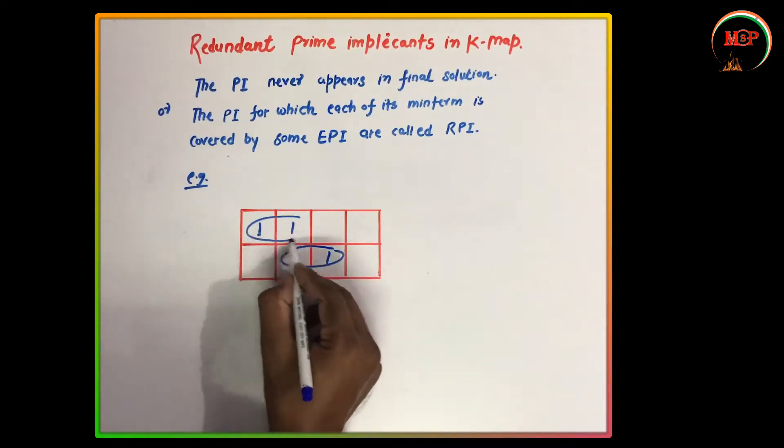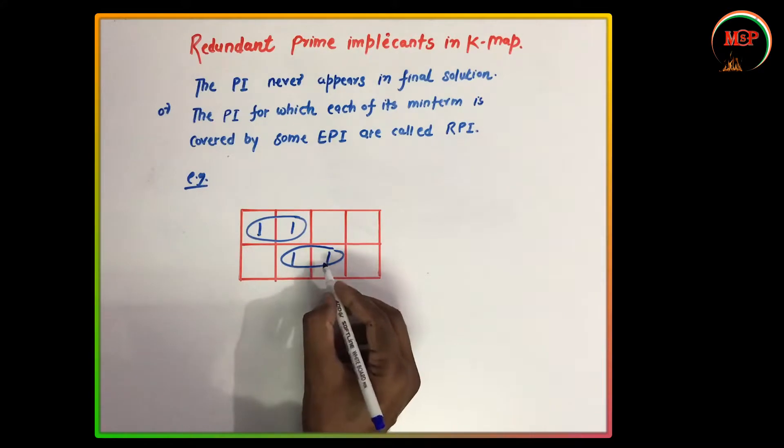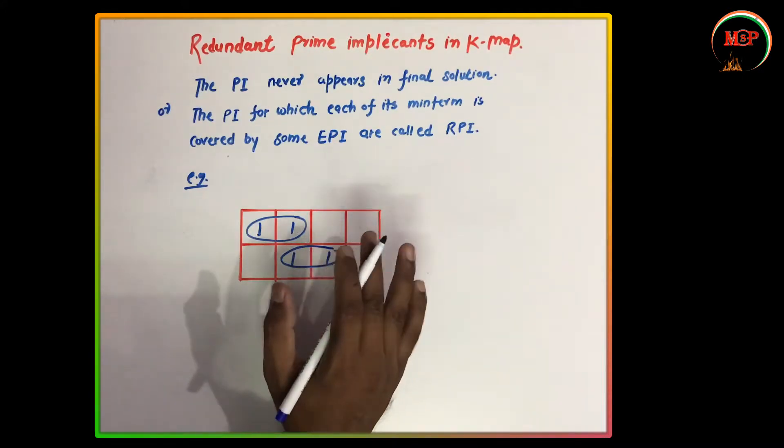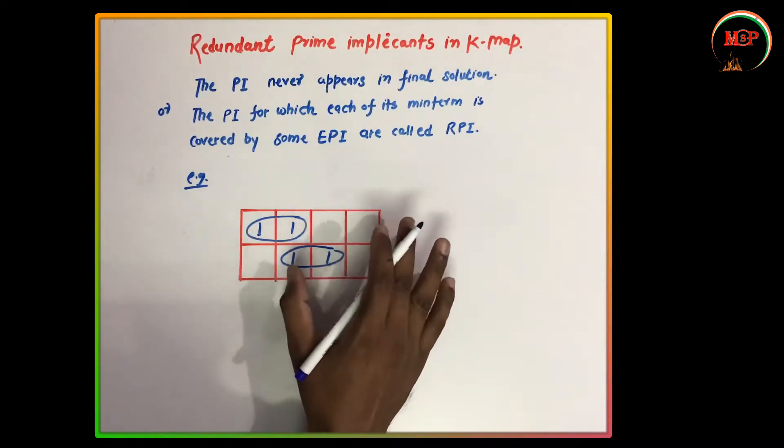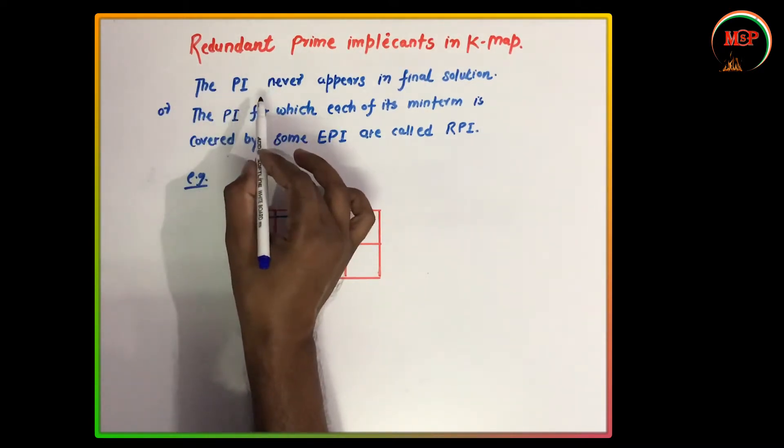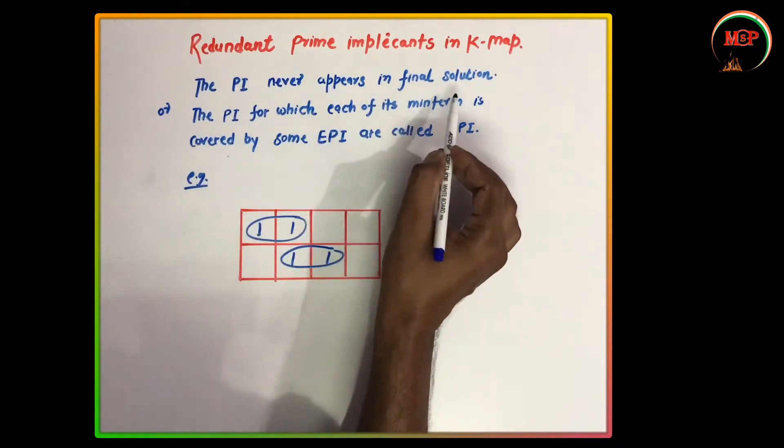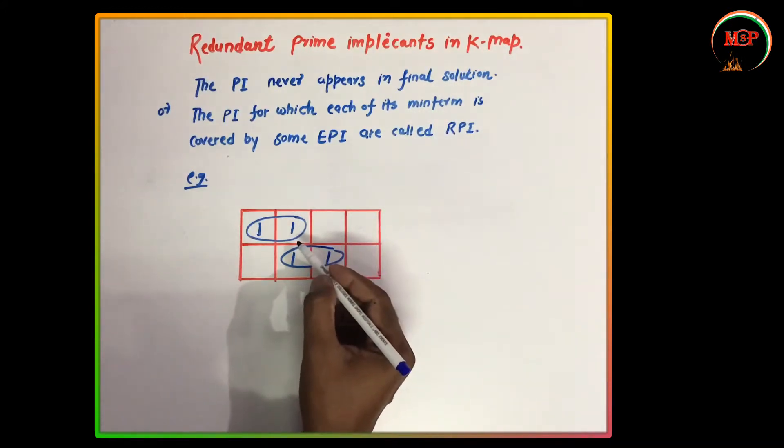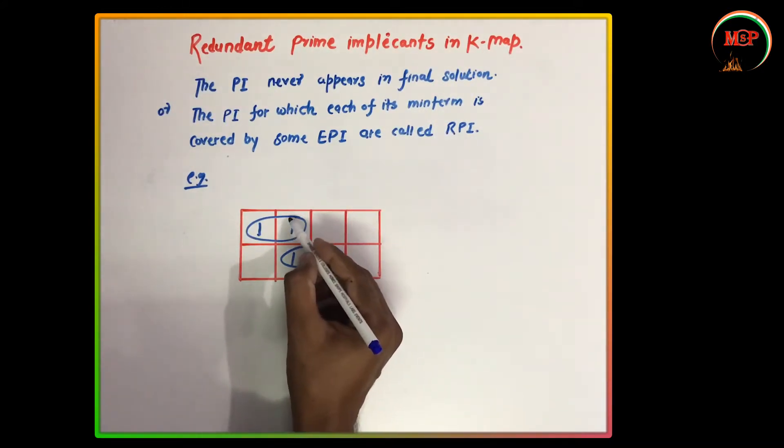So these are our two pairs that exist in the solution. But RPI - what is it? The PI never appears in the final solution. Now there is one pair here.